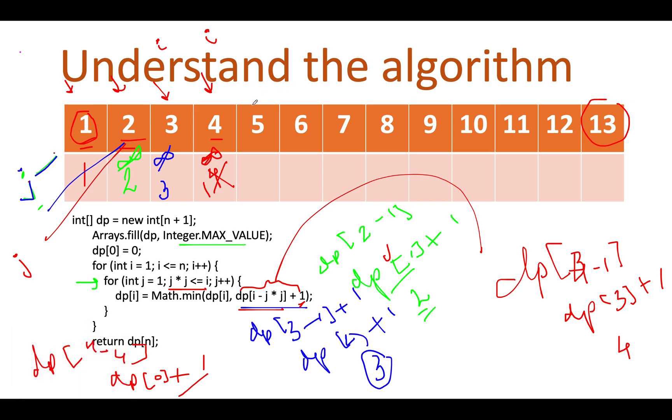Let me just use another color pen. Now i points to five. So what we are going to do, we'll start the iteration and the initial value held at five is infinity. j points to one. So it turns out to be equal to dp of five minus one square, which is four plus one, which is nothing but dp of four is one plus one, which is two. So this gives me two. So let me just replace infinity by two.